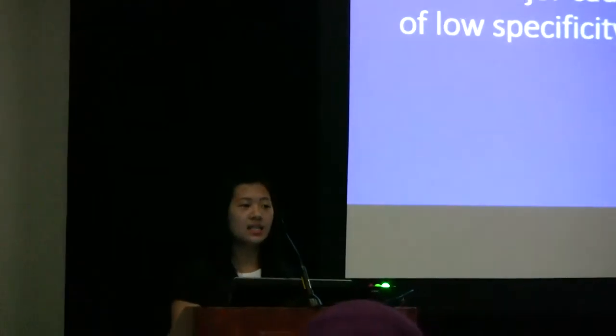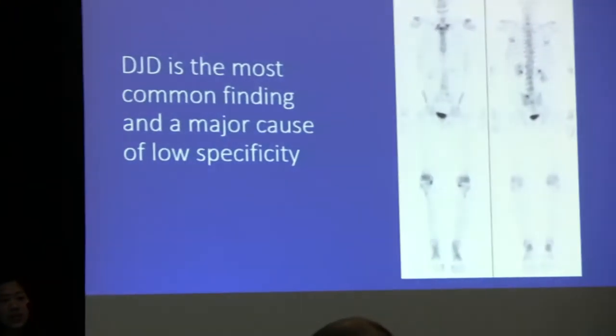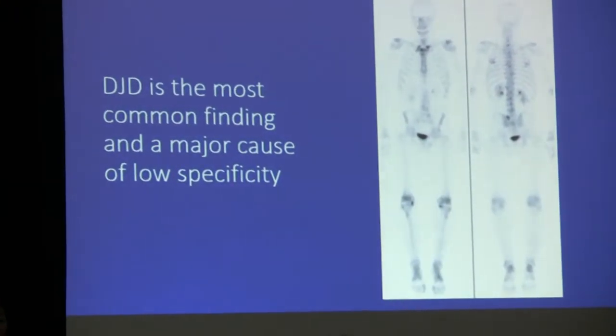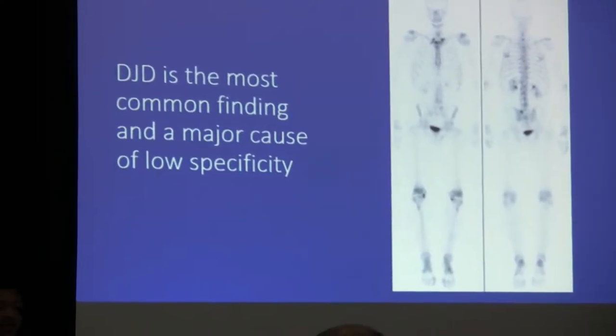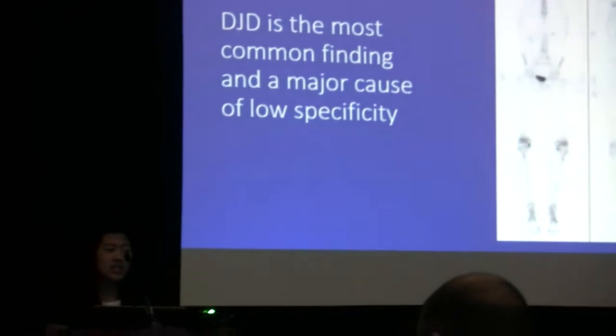This poses a problem for nuclear medicine physicians when interpreting the image, because they must decide whether an area of increased tracer uptake is due to a malignant bone metastasis or just a benign etiology such as DJD, and these images would be a lot easier to read without the interference of DJD activity.